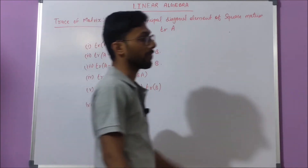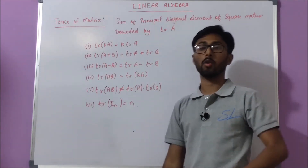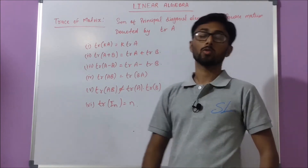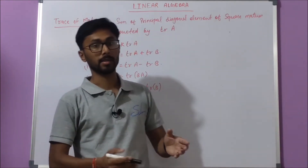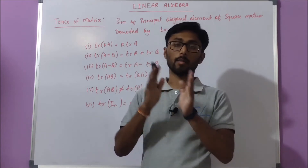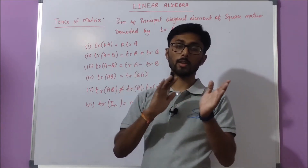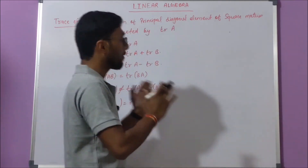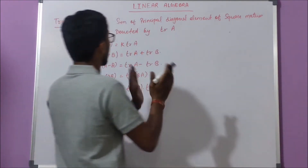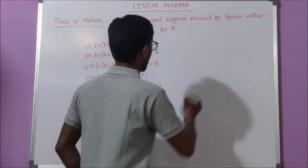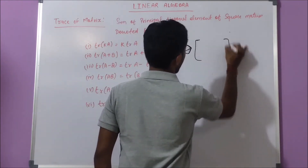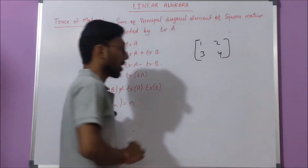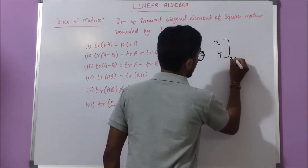The trace of a matrix is the sum of principal diagonal elements of a square matrix. A square matrix is one where the number of rows and number of columns are equal. The sum of principal diagonal elements of a square matrix is called the trace of that matrix. Let's take a square matrix of size 2×2.